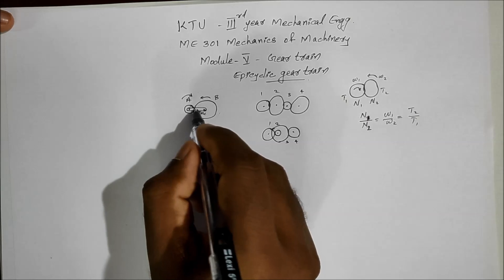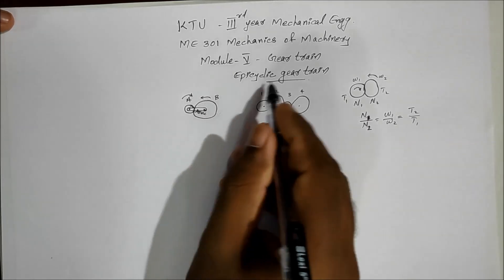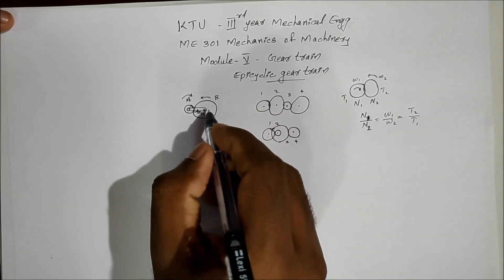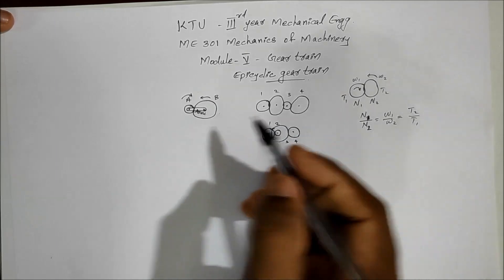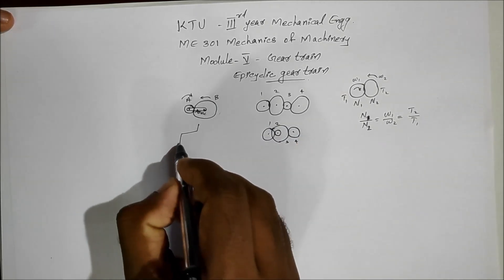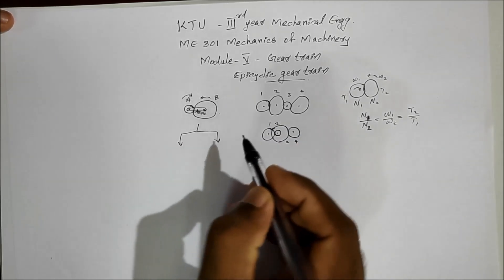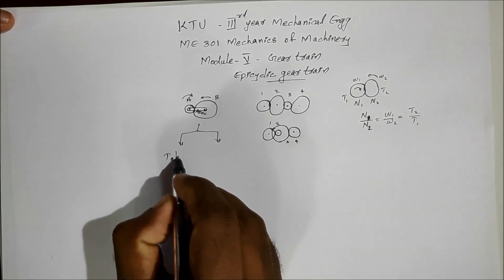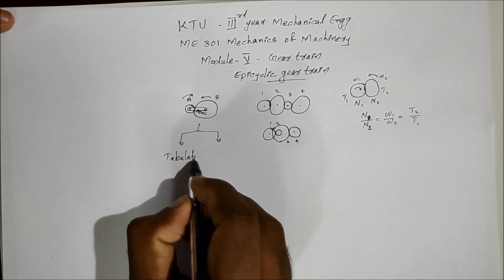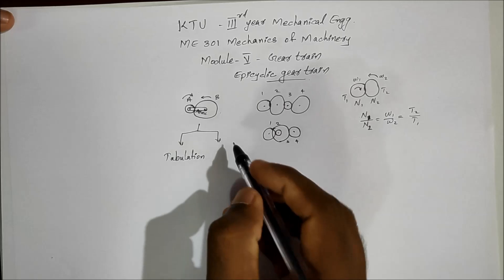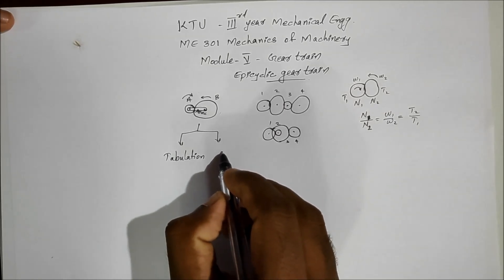There are different cases possible with an epicyclic gear train. The first method to solve problems is the tabulation method, and the second method is the formula method.